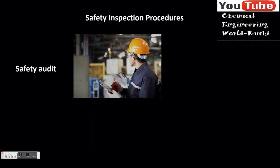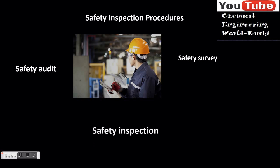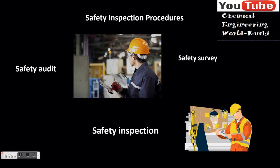Safety inspection procedures include: a safety audit, which subjects each area of a company's activity to a systematic critical examination with the object of minimizing loss; a safety survey; and a safety inspection, which is a routine scheduled inspection of a unit or department that may be carried out by a fire safety representative from within the unit.